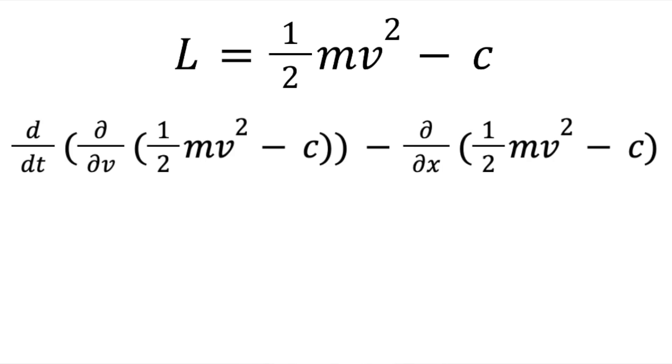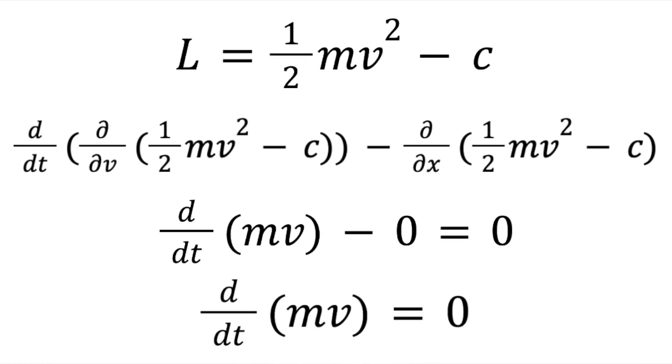Now substitute this into the Euler-Lagrange equation. The partial derivative of L with respect to v is still mv. But the partial derivative of L with respect to x is now zero, since all variables besides x are assumed to be constant. So the Euler-Lagrange equation now becomes the derivative of mv is equal to zero.